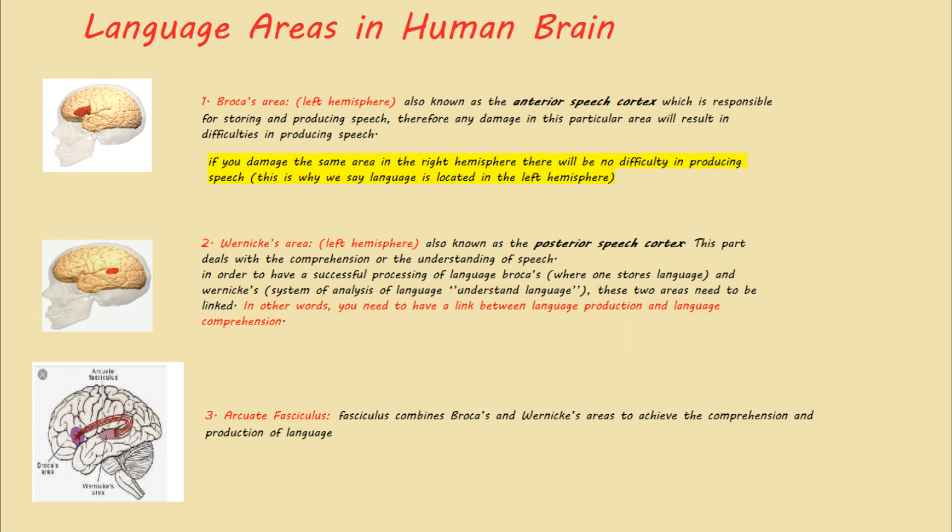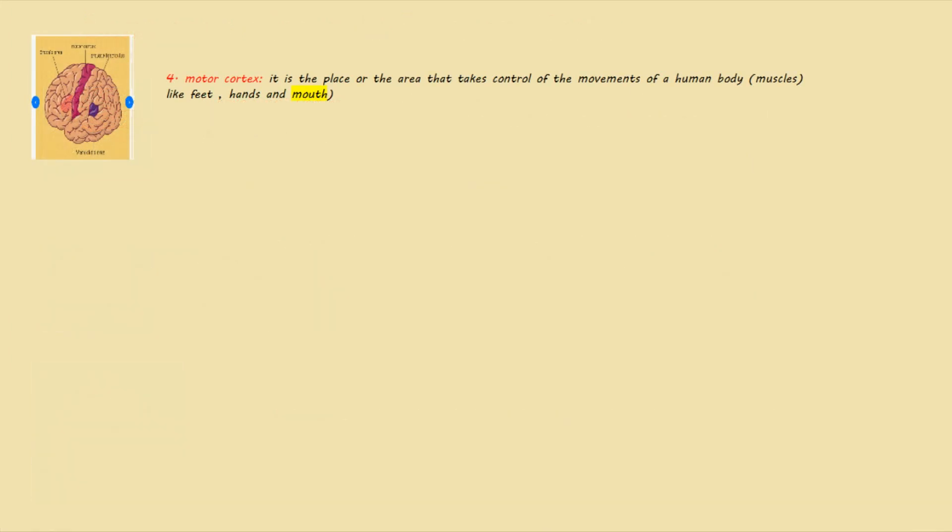The fourth area is the motor cortex. It is the area that takes control of the movements of the human body — muscles in general, like feet, hands, and mouth. The mouth is very important because it is the context of today's lecture. So we have these four parts identified, and they are all related to language in the brain.